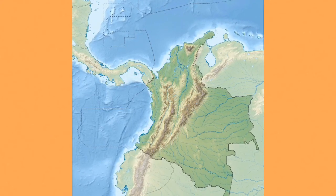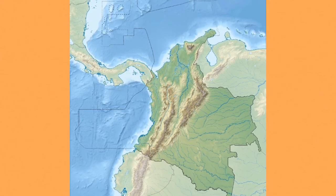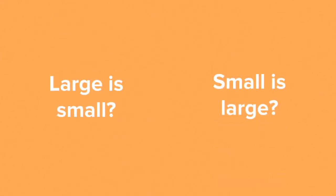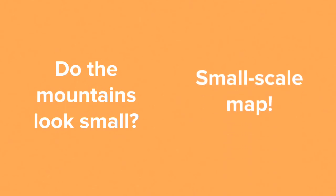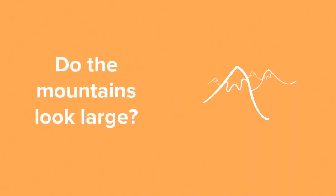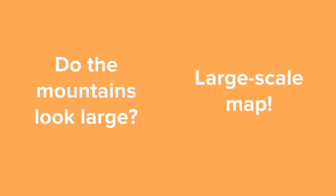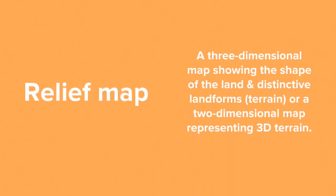For example, we can't see a Bali Beach Shack on this map. Now, these two maps confuse a lot of students — isn't large small and small large, they ask? The key is to focus on the features in the map. Do the mountains look small? Then it's a small-scale map. Do the mountains look large? Then it's a large-scale map.